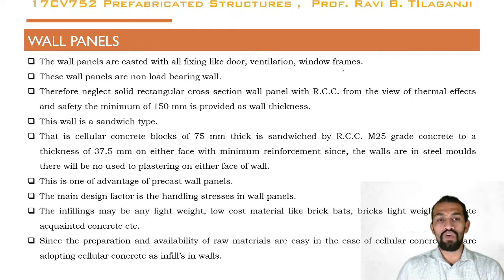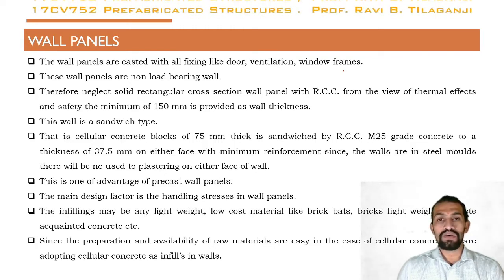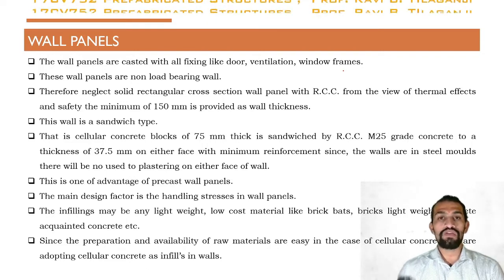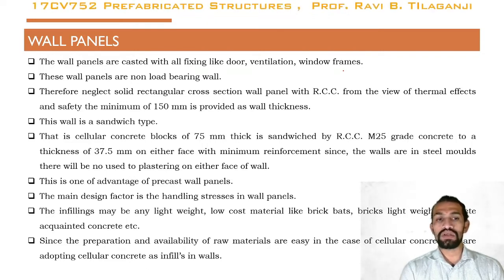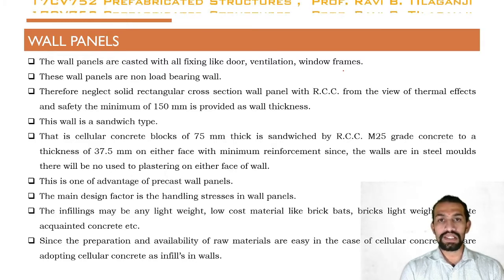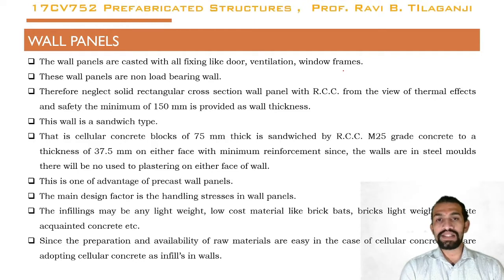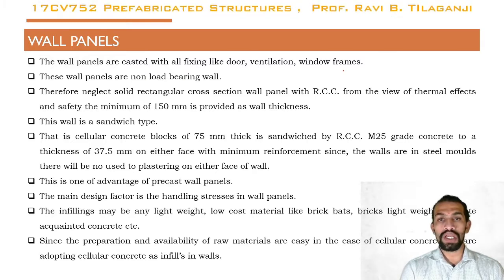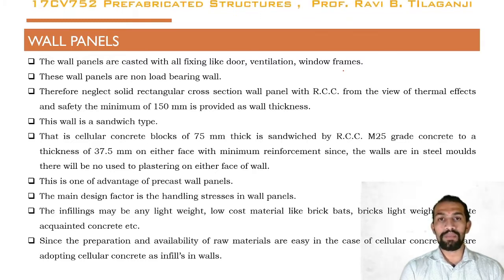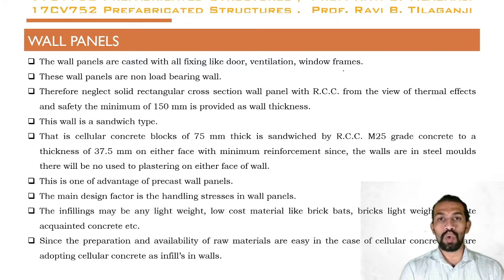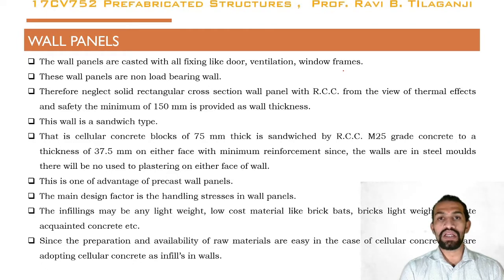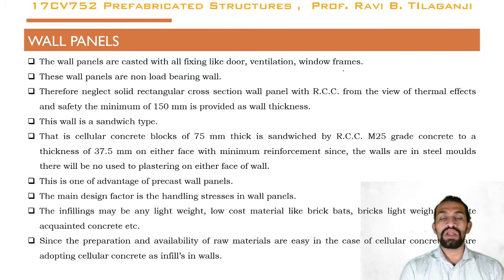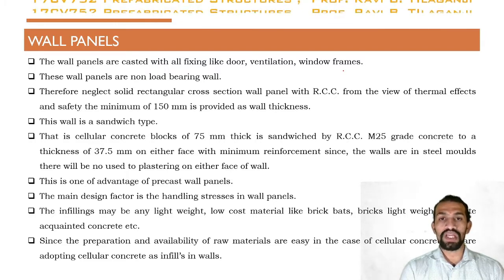The walls are cast using steel formwork, which we call steel molds. These steel molds provide the RCC wall surface as a smooth finish, requiring no internal or external plastering. A clearly finished surface is available at the time of casting itself, which is one of the advantages of precast panel walls.